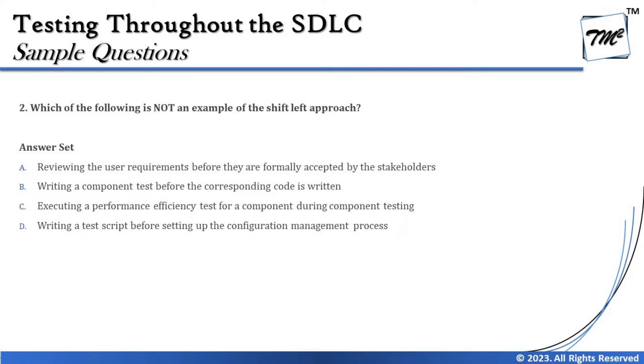Question two: which of the following is NOT an example of the shift left approach? The shift left approach is about pre-poning activities earlier than the traditional way. For example, pre-poning test execution or writing test cases much earlier than the desired phase. Whenever you pre-pone an activity based on considerations like complexity or risk, that's a shift left approach — it's about prevention, not just execution.